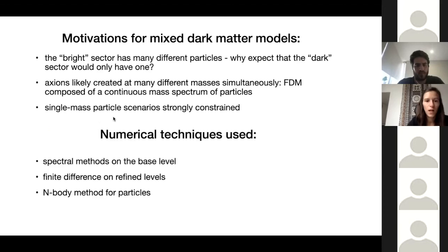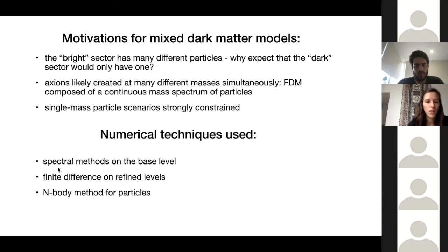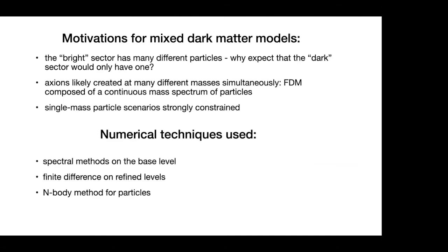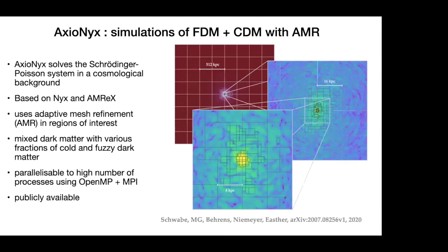On the base grid we use spectral methods — the Fourier transform — and solve the Poisson equation in Fourier space because it's much easier. On the refined levels we use finite differences, which is more expensive but necessary because spectral methods require periodic boundary conditions, which the smaller refinement boxes don't have. For the particles, which are also simulated here, we use N-body methods already implemented in the base code. The simulation shown was 30% fuzzy dark matter and 70% cold dark matter — what's shown is really just the fuzzy component, but there were also particles on top.